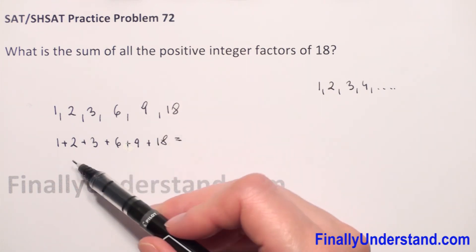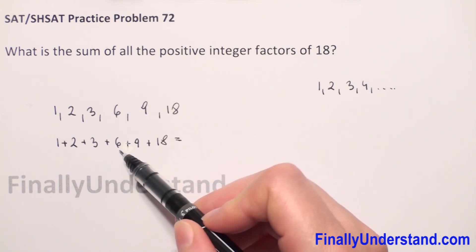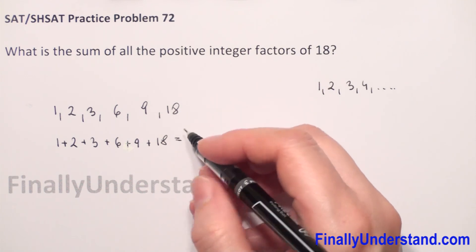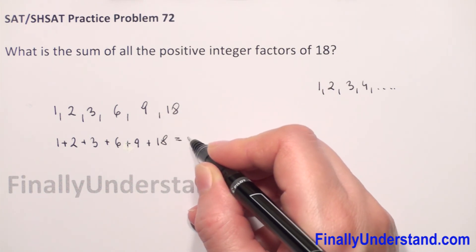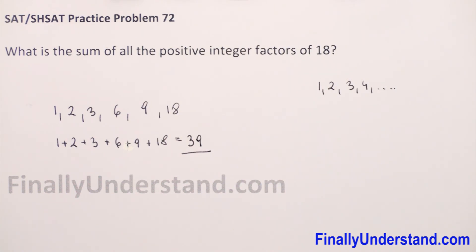This is equal 1 plus 2 is 3, 6, 12, 21 plus 18 is 39. So this is my solution.